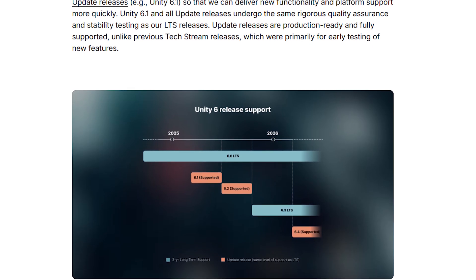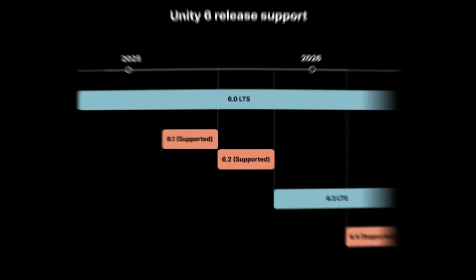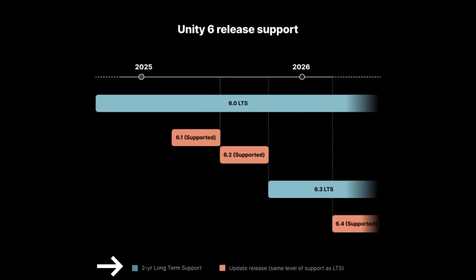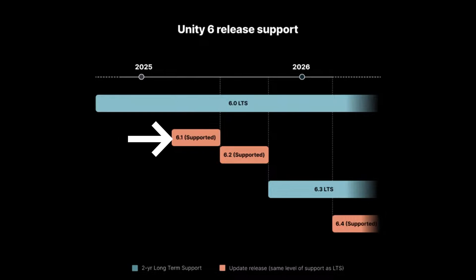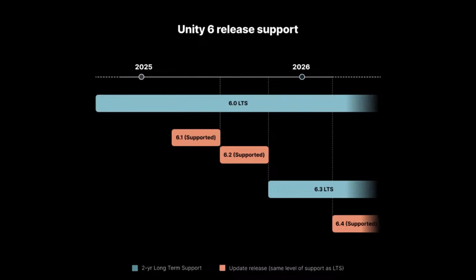Unity 6.1 is available with an LTS — long-term support — which means they're going to support this for up to two years, with maybe an additional year if you're using enterprise or industry. Their old long-term supported version meant if you found bugs with the engine and needed assistance from them, they'd be able to cover that. With Unity 6.1 releasing, what they are saying is they will have the same level of LTS, but only until the next release is published. So when 6.2 comes around, 6.1 will lose its supported status and 6.2 will be the supported version.